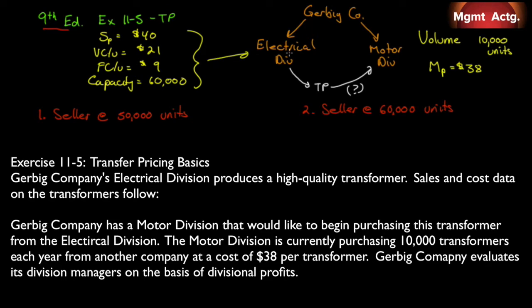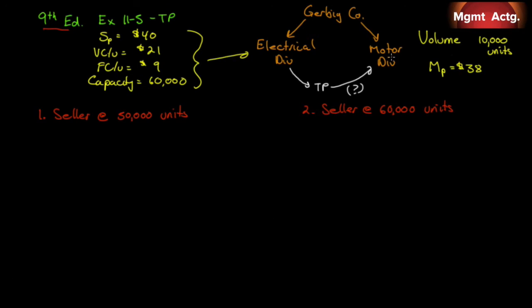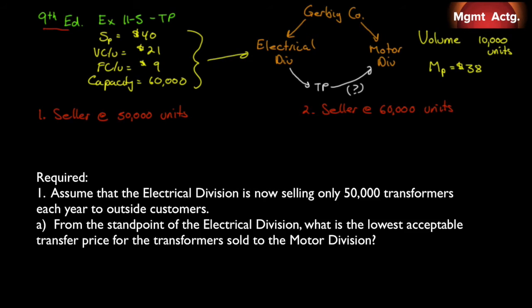Gerbig Company has a motor division that would like to begin purchasing this transformer from the electrical division. The motor division is currently purchasing 10,000 transformers each year from another company at a cost of $38 per transformer. Gerbig evaluates its division managers on divisional profits. The motor division features: volume 10,000 units, paying $38.